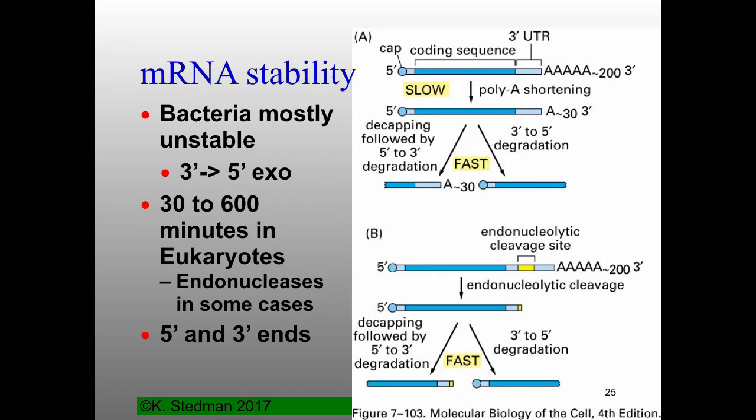mRNAs in eukaryotic cells are traditionally degraded by a couple of different methods. If we have a common eukaryotic mRNA with a 5-prime cap, 3-prime untranslated region, and a poly-A tail, the first thing that happens in mRNA degradation is that the poly-A tail gets chewed back — starting with about 200 A residues down to a critical poly-A tail length of around 30 A residues. At that point, the 5-prime end gets decapped, followed by 5-prime to 3-prime degradation. Once the poly-A tail is removed, you can also get 3-prime to 5-prime degradation. This process of moving from a long to a short poly-A tail is relatively slow compared to what happens next.